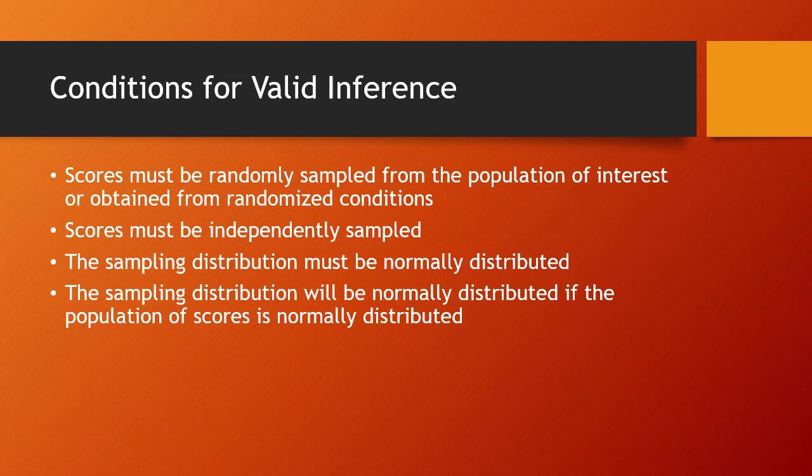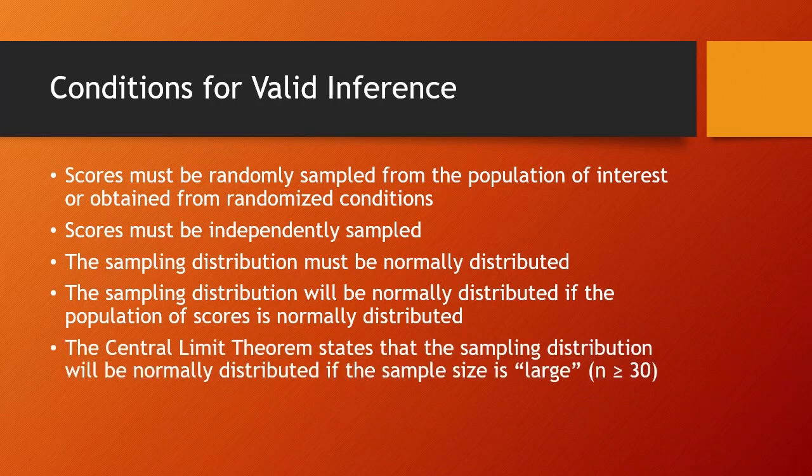But what if the original scores are not normally distributed? The central limit theorem tells us that the sampling distribution will be normally distributed if the sample size is large, that is, at least 30 or so. The key is, we need a normal sampling distribution and we can obtain that even if the original distribution of scores is not normal.